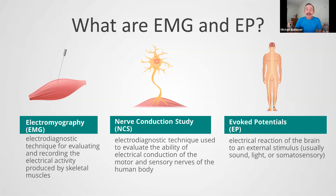What are EMG and EP? Sometimes you can face terms such as electromyography, nerve conduction study (NCS), neurography (NG), or evoked potentials (EP). All these techniques are about recording the electrical signals from our neuromuscular system, including the central system, spinal cord, and brain.